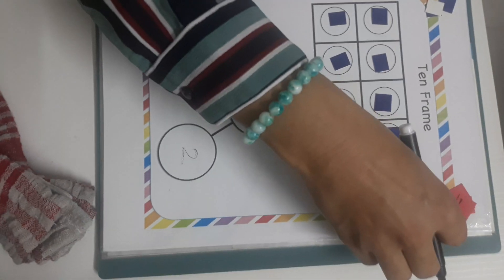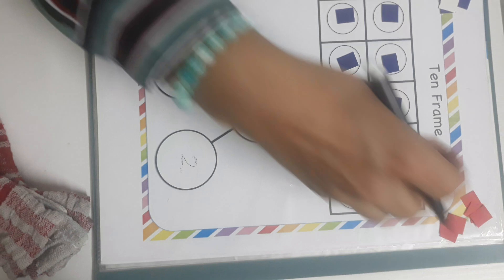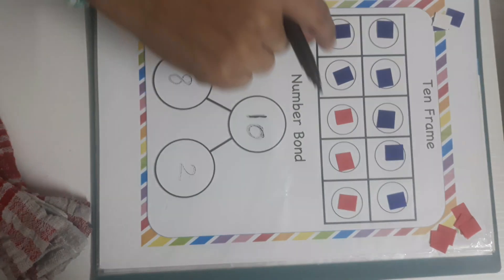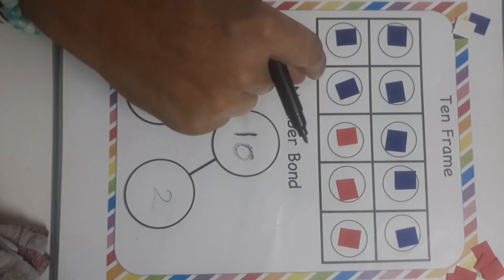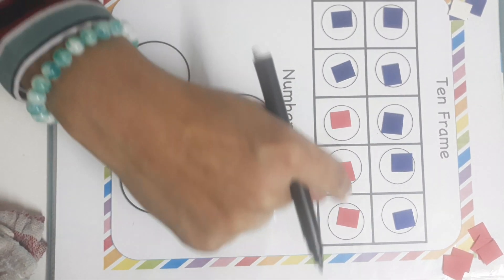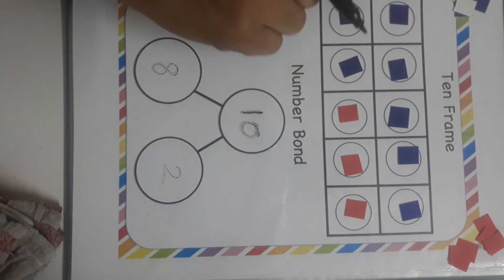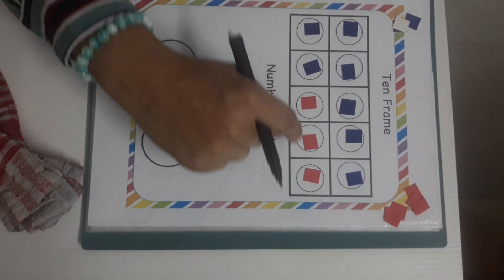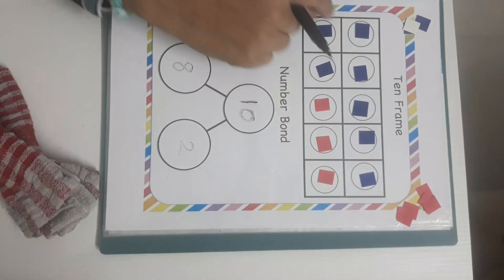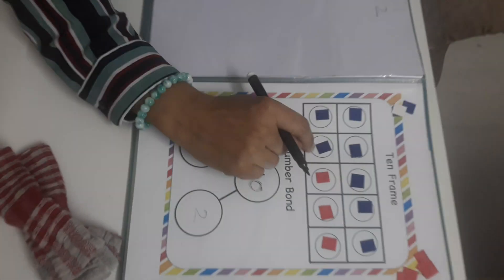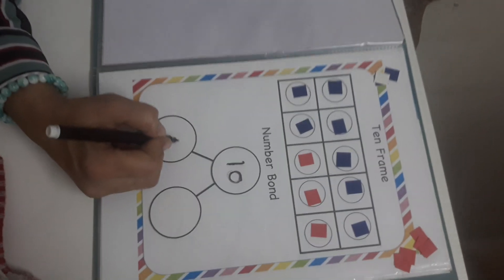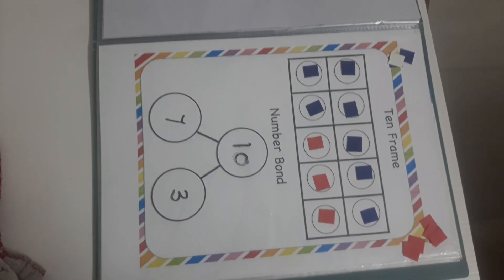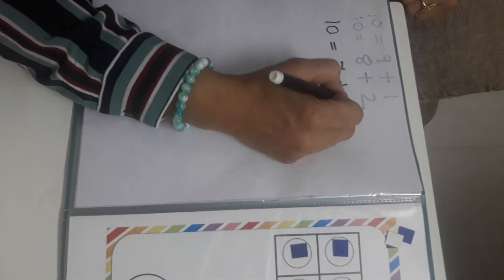Very good. Now let me remove one more and I am adding one red here. So 1, 2, 3, 4, 5, 6, 7 and then 1, 2, 3. Can you see? The whole frame is filled with these small squares, and this is a frame of 10. We already counted — 1 through 10. In this 10's frame there are 7 blue squares and 3 red squares. So let's fill it: 10 is equal to 7 plus 3.